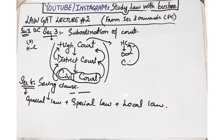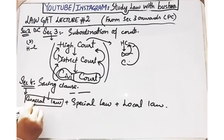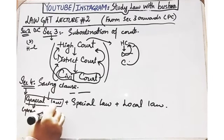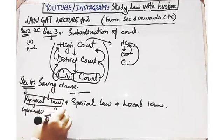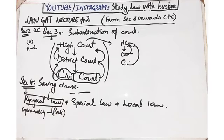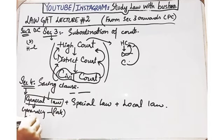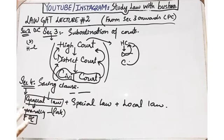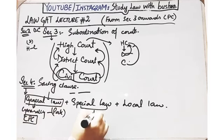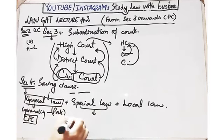Section 4 में तीन चीज़ें बताई हैं: general law, special law, और local law। General law वो law है जो पाकिस्तान के अंदर तमाम courts में applicable है और तमाम लोगों पर apply हो रहा है। For example, Civil Procedure Code (CPC) एक general law है जो as a whole पूरे पाकिस्तान में तमाम courts पर apply हो रही है।